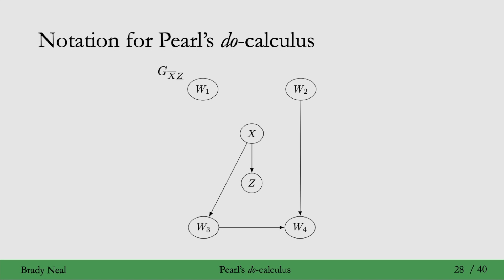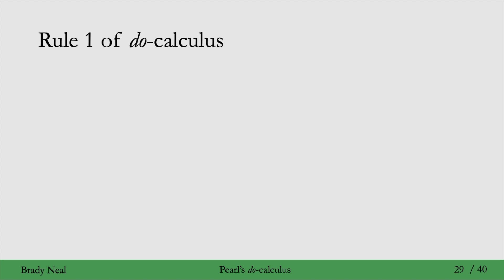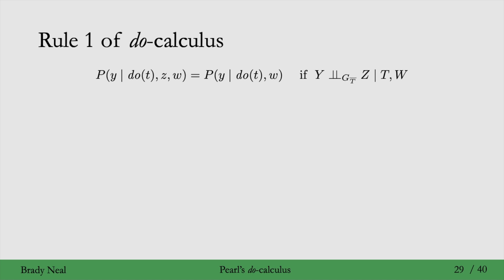With that notation introduced, we can now show you the rules of do-calculus, starting with the first rule. This first rule is about when we can remove z from behind the conditioning bar. We can do that when y is d-separated from z in the graph where the incoming edges to t are removed, because we've done t here, and we're conditioning on w — so it's d-separated given w and t.